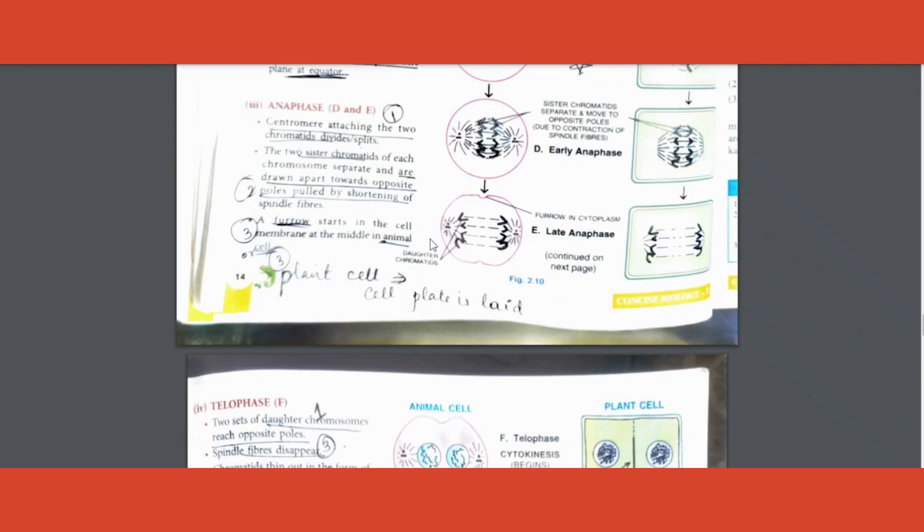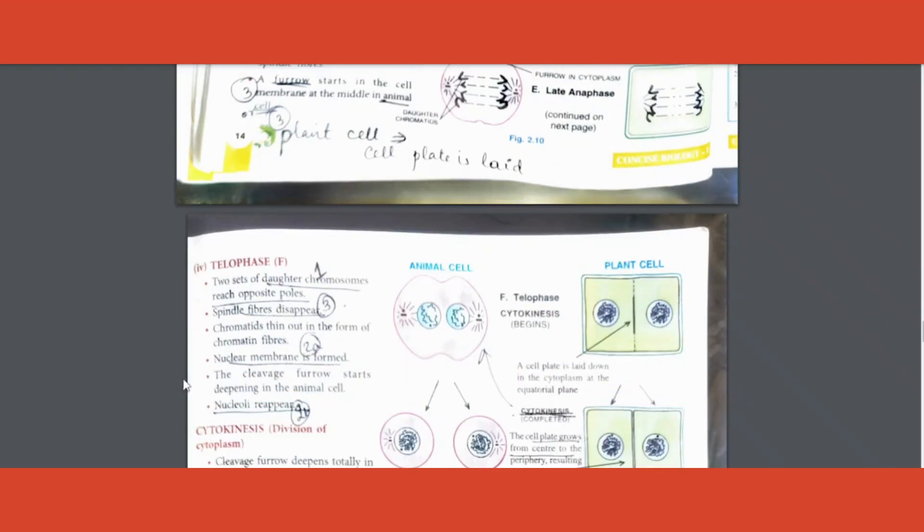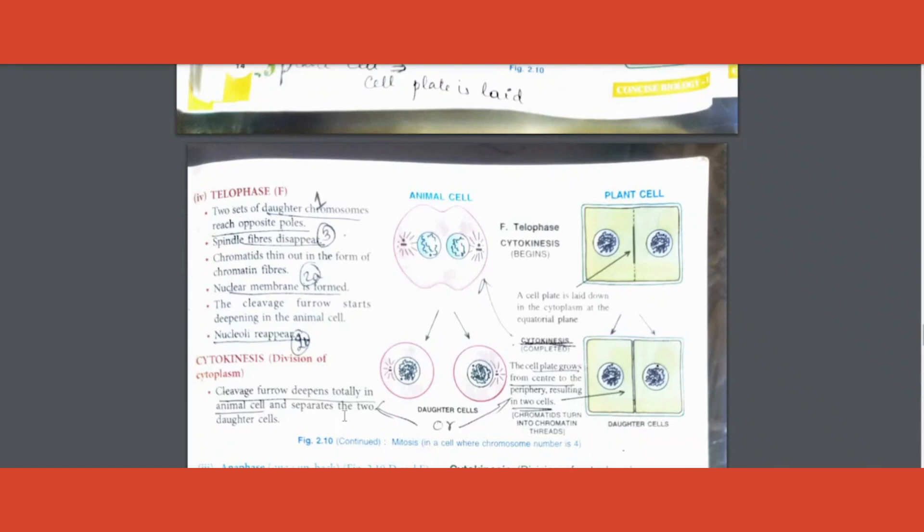In case of plant and animal there is slight difference when it comes to telophase. In telophase, what do you write? Two sets of chromosomes reach opposite poles. Spindle fibers disappear. Same thing - chromatids thin out in the form of chromatin fiber. Nuclear membrane and nuclei reappear - opposite of prophase.